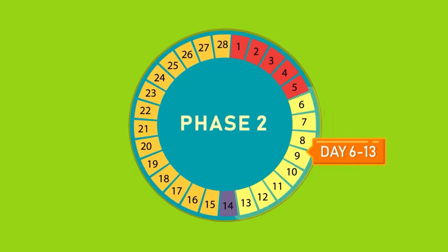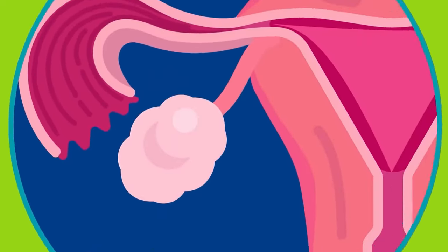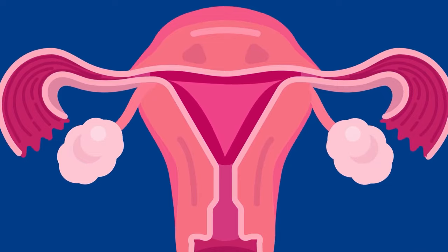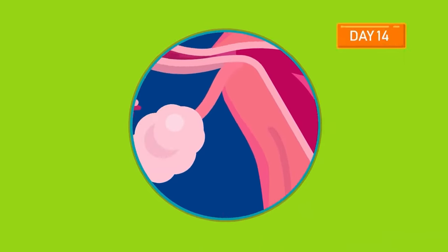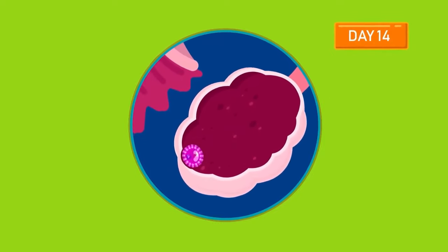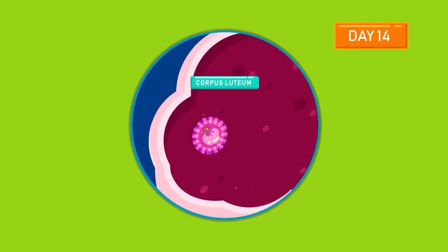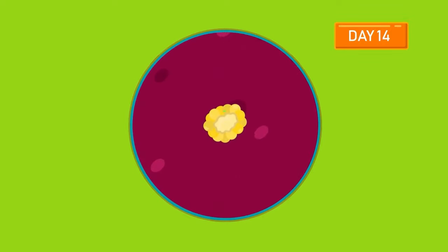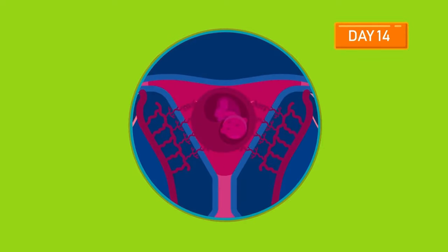Day 6 to 13 is Phase 2. The ovaries secrete oestrogen, which starts the repair and growth of the endometrium. The endometrium becomes thicker and bleeding stops completely. On day 14, a mature ovum is released from the ovaries. The Graafian follicle becomes the corpus luteum, which releases progesterone along with some oestrogen. Progesterone causes the uterine lining to remain thick and soft, well supplied by blood vessels, and the endometrium is ready for pregnancy.